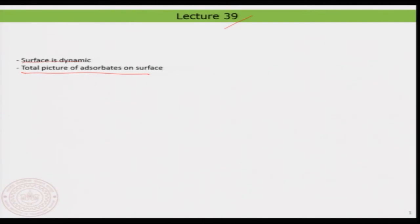If you would have looked at the surface over a longer range of time, you would have noticed that nothing is basically stagnant on the surface. Every ad atom, even the surface atom, is basically moving around. That means surface is dynamic at all times, at all temperatures. Only when you go down to very, very low temperature can you ideally freeze those adsorbates or surface atoms. Otherwise they are always dynamic and we need to take that into account when we study surfaces and interfaces.